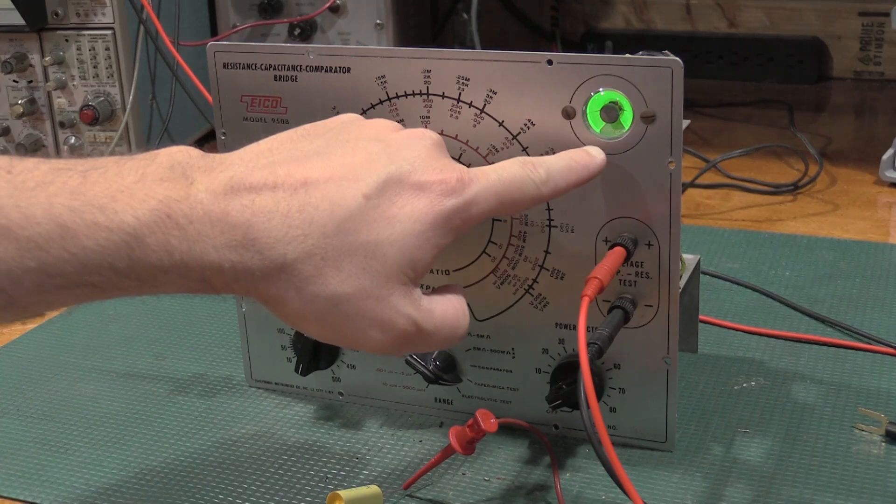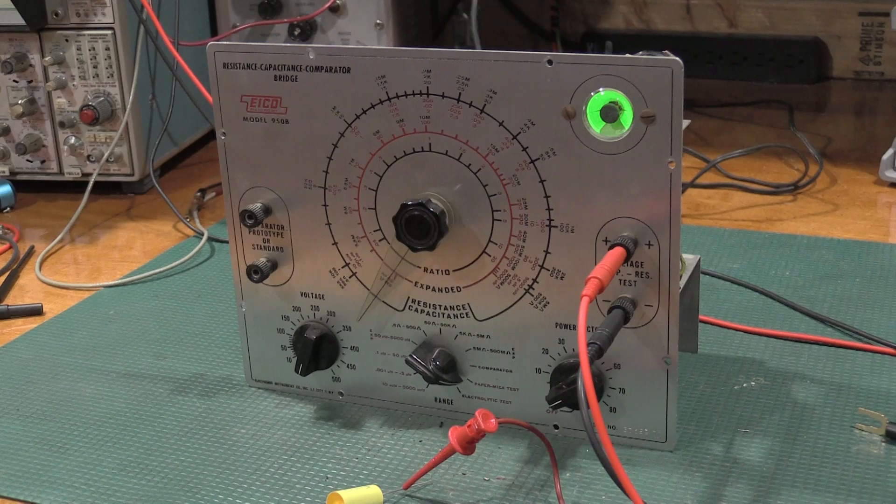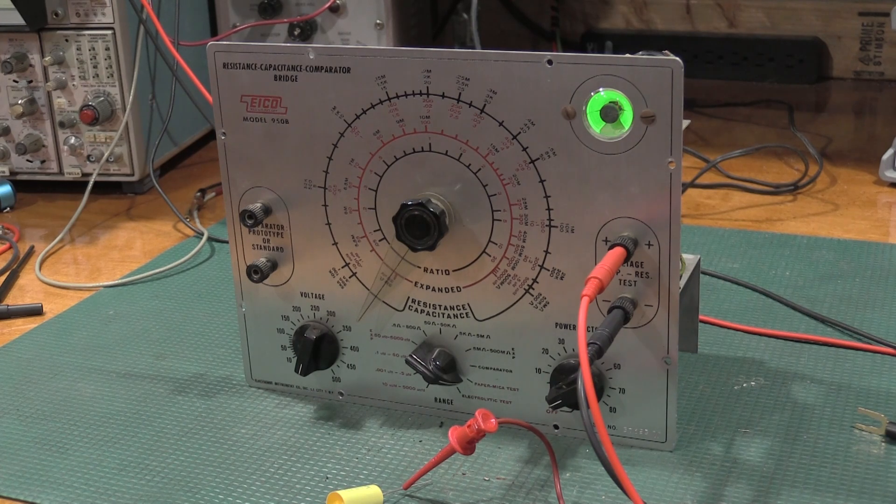So I'm going to let this burn on the bench just to make sure we don't have any other problems. This looks like a very low time unit. The eye tube on this one's very bright. I did not replace this. So I don't think this unit has seen a lot of time on it, but let me get it thrown back in the case. I'll let it sit on the bench and cook for a while just to make sure we don't have any other problems. And then it's ready to go back down to Tennessee.